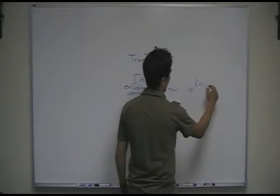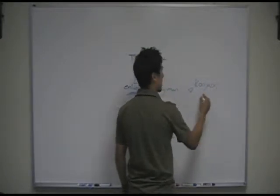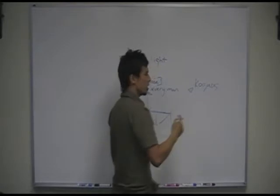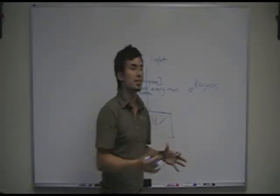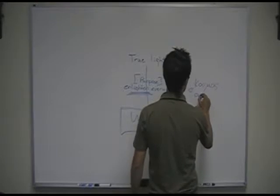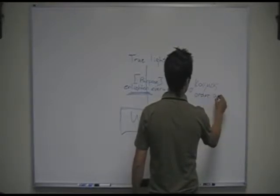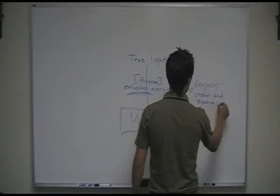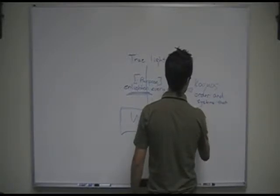And I talked to you about in John 1, this world here is cosmos in the Greek, and it is not just the earth or the planet. It has to do with the order and systems that govern humanity.